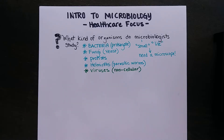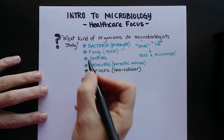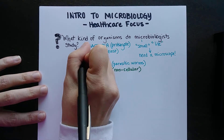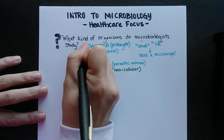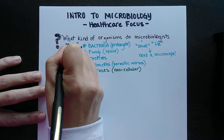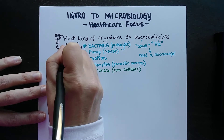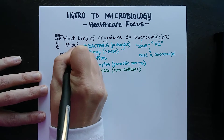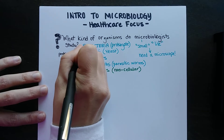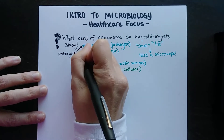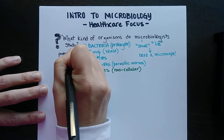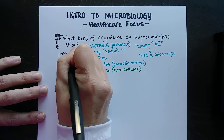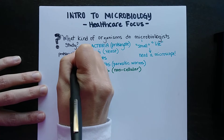To summarize: bacteria are prokaryotes, and all the rest — fungi, protists, helminths, plants, and animals — are eukaryotes.